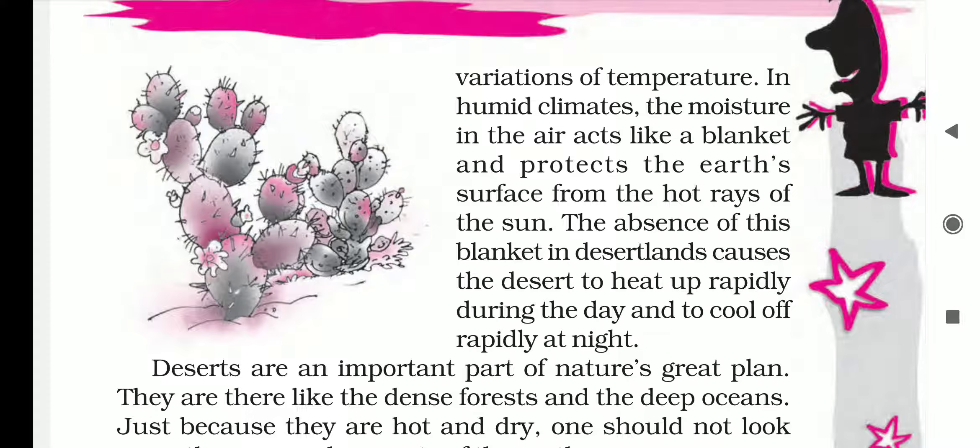The major feature of all deserts is, of course, dryness and variations of temperature. The basic characteristics of deserts are that they are dry, without greenery, and with a variation in temperature. In humid climates the moisture in the air acts like a blanket and protects the earth's surface from the hot rays of the sun. The absence of this blanket in desert lands causes the desert to heat up rapidly during the day and cool off rapidly at night, so there is great variation in temperature — it rises much during the day and falls during the night.